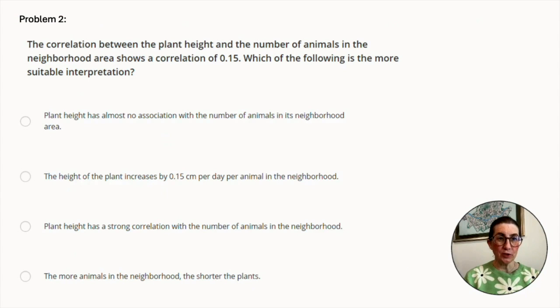Problem number two. The correlation between the plant height and the number of animals in the neighborhood area shows a correlation of 0.15. Which of the following is the more suitable interpretation? Let's look at the figure 0.15. This demonstrates a very weak correlation. So let's keep that in mind as we review the answers.